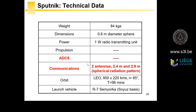To communicate, Sputnik has two antennas with a spherical radiation pattern. Don't forget this course is just an introduction — plenty of details will follow in the next lectures, including a full lecture on orbits next week. For Sputnik, the orbit was a LEO with an apogee of 950 km, a perigee of 220 km, and an inclination of 65 degrees.